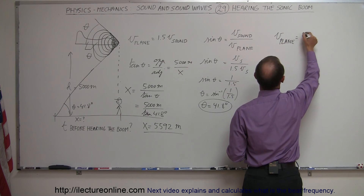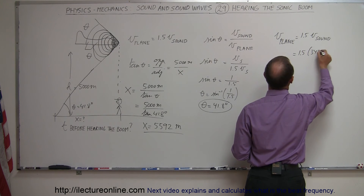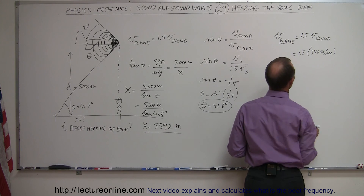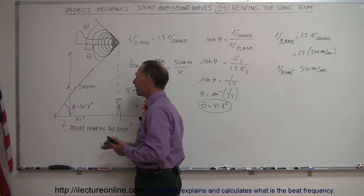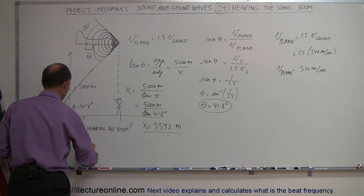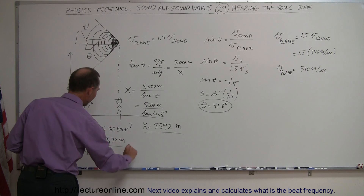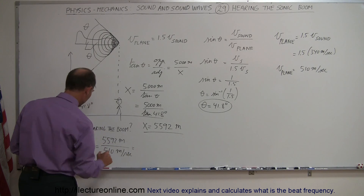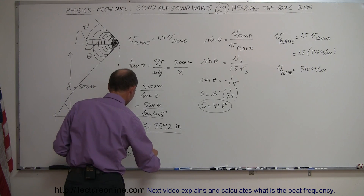The velocity of the plane equals 1.5 times the velocity of sound, which is 1.5 times 340 meters per second. So the velocity of the plane is 510 meters per second. The time equals distance divided by velocity. The distance is 5,592 meters and the velocity of that cone-shaped sound region is 510 meters per second. Dividing that gives us about 11 seconds.